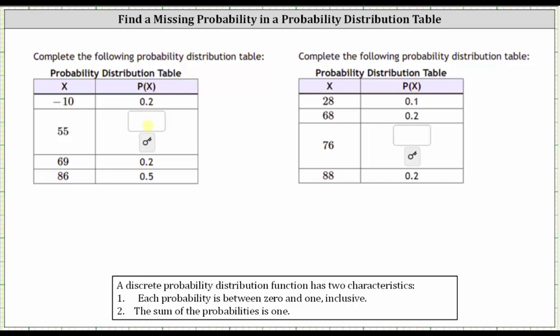We were asked to find the missing probability from the probability distribution table. The key to remember here is that the sum of the probabilities must be one. So the missing value here is a probability that x is equal to 55.